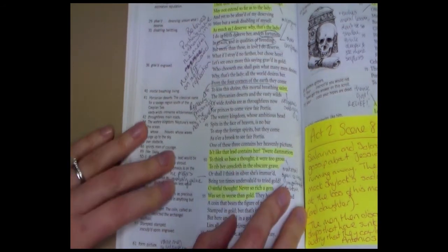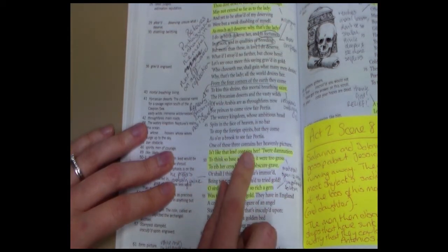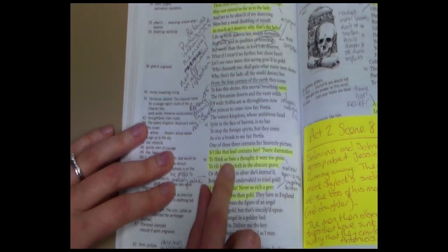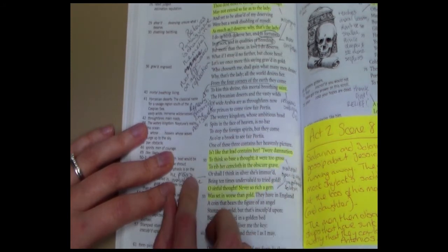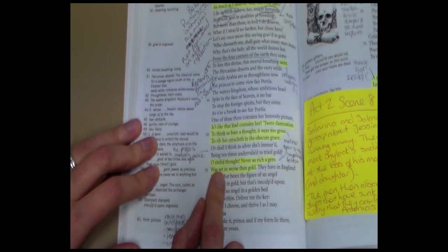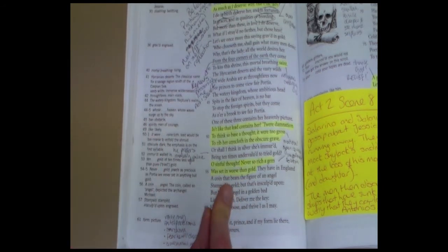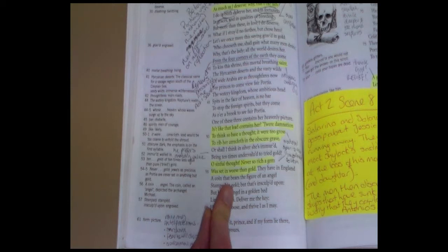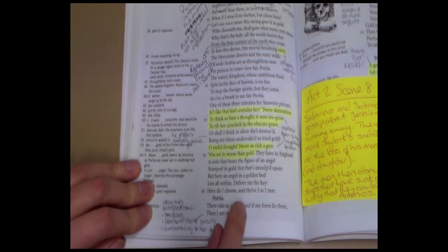As we go on then, he goes back through the caskets and he starts to question, is it likely that lead contains her? He says, to her damnation to think that so base a thought. It were too gross to rib her. So he says that, no, this material is too base for her. It's too cheap. It isn't the sort of material he would associate with Portia. He then looks at the silver and he says, oh, that's a sinful thought. Never so rich a gem was set in worse than gold. And again, he's talking about her value and he reflects on her value and considers her value to be equivalent to the gold casket. And at this point, he decides to ask for the key. Deliver me the key. Here I do choose and thrive I as I may. So he's decided that he's going to open the gold casket.